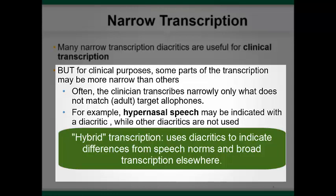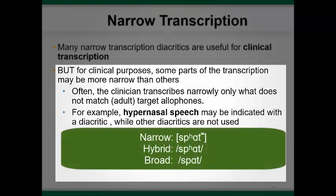In practice, I will let you know if you should be doing true narrow transcription, in which all relevant allophones should be transcribed, or hybrid transcription, in which only allophones that differ from the standards should be transcribed. We will use brackets only for true narrow transcription, and slashes for hybrid transcription, but you should make a note if hybrid transcription is used. For example, if I were doing narrow transcription, I would use all the allophones for the word 'spot,' but in hybrid transcription, I would transcribe only the unexpected one on the P, and in broad transcription, I would not transcribe that difference at all.